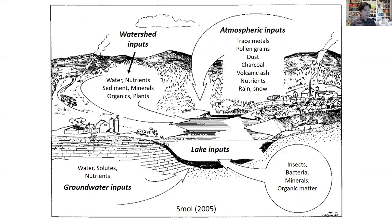This concept sketch here shows a diagram of a lake and its watershed or catchment. Lakes receive inputs of material from a variety of different sources. The first is the watershed itself — the area on land that contributes water, nutrients, sediments, minerals, organic materials, and plants to the lake. We then have inputs from the atmosphere: precipitation, rain and snow, but also trace metals, pollen grains, dust, charcoal, volcanic ash, and nutrients.